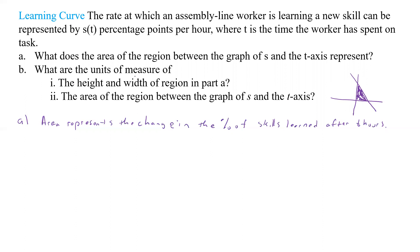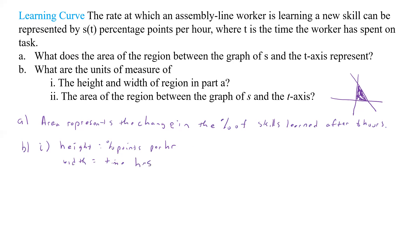What is the height and width of the region in part A? For part B, part I: the height is going to be the units of S of T, so that's going to be percentage points per hour. And our width is time, so that's going to be time in hours.